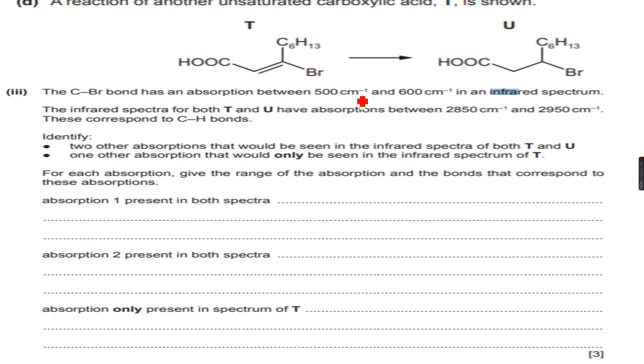Before we read anything else, let's just see what is different in T and U. The carboxylic acid is the same, the bromine is the same, the C6H13 side chain is the same. So this means the only difference is that there is no alkene bond, which means T has been hydrogenated to form U.